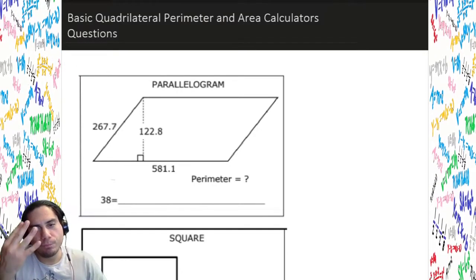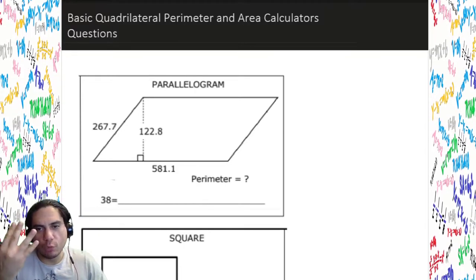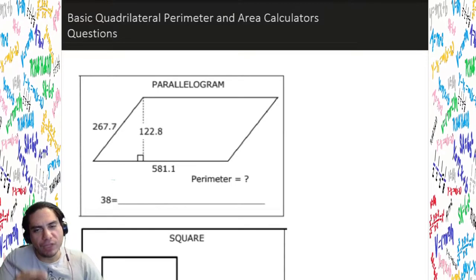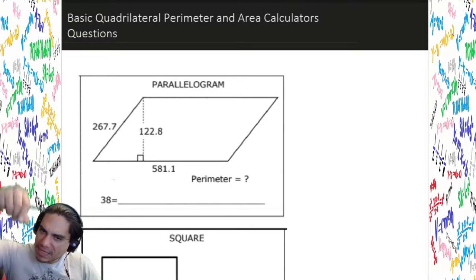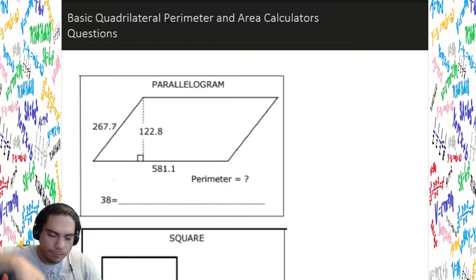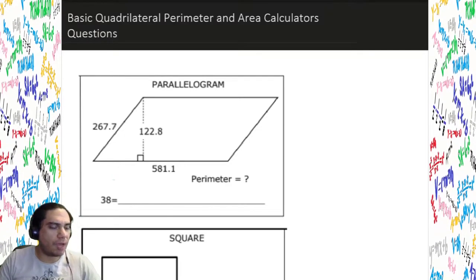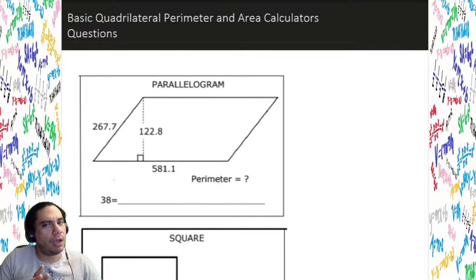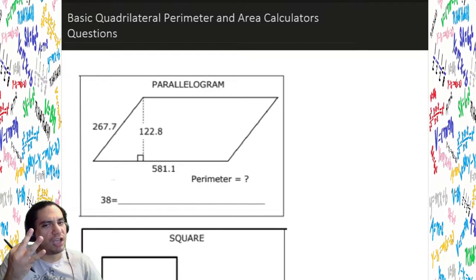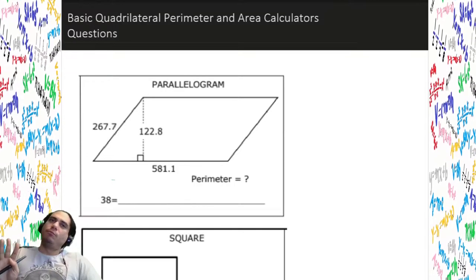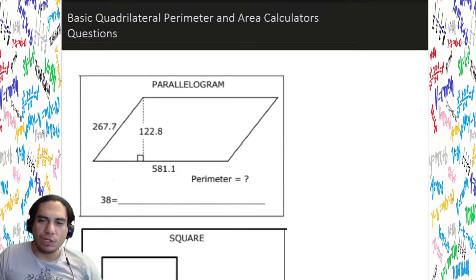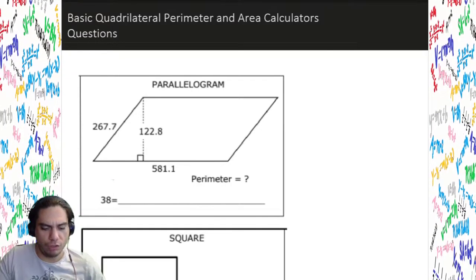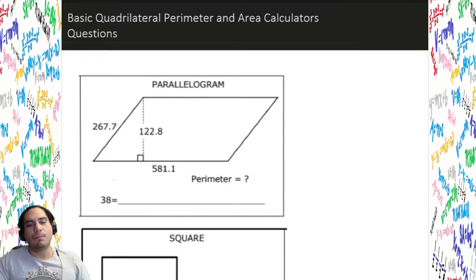Before we start — a quadrilateral has four sides, and we're dealing with the most basic ones of all. We've got a parallelogram, a square, and we're gonna mix in some rectangles. A lot of these parallelograms may seem intimidating, but it ain't too much for nobody — we're gonna get these and knock them out.